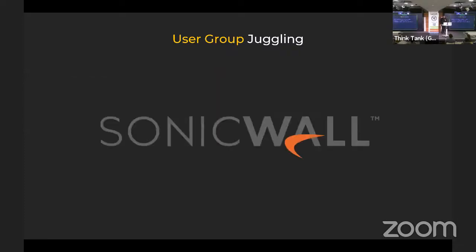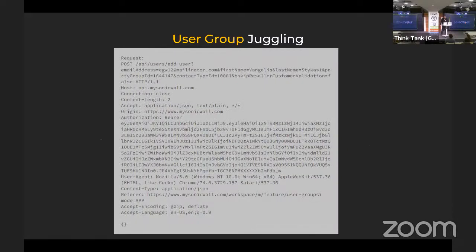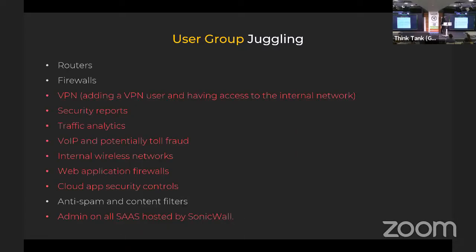SonicWall — a security company. It had the property 'group_id', and when you changed that you ended up with a lot of things: access to routers, firewalls, VPNs, web application firewalls, SaaS — whatever you can name it. All from a simple user group juggling.